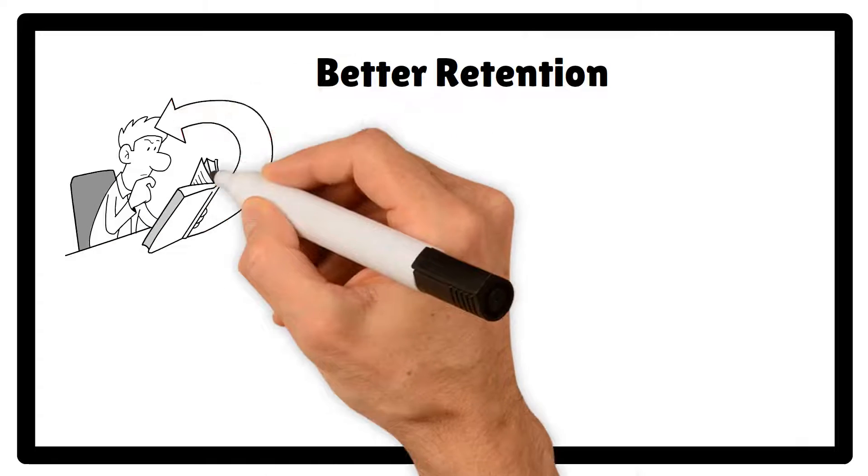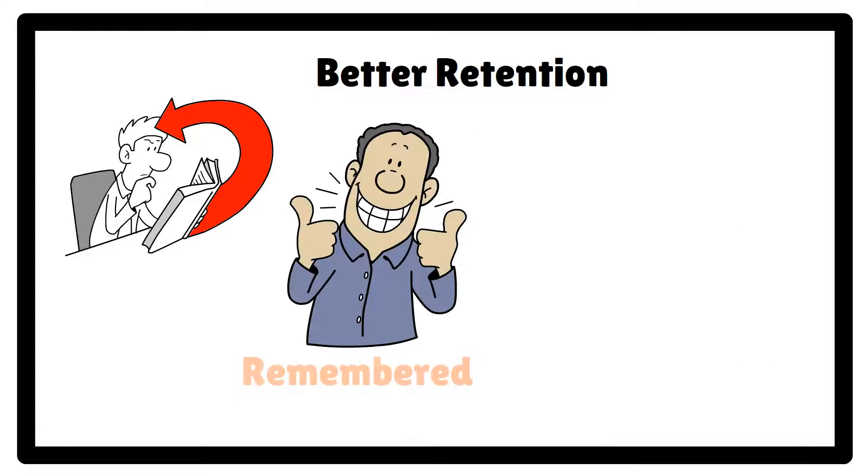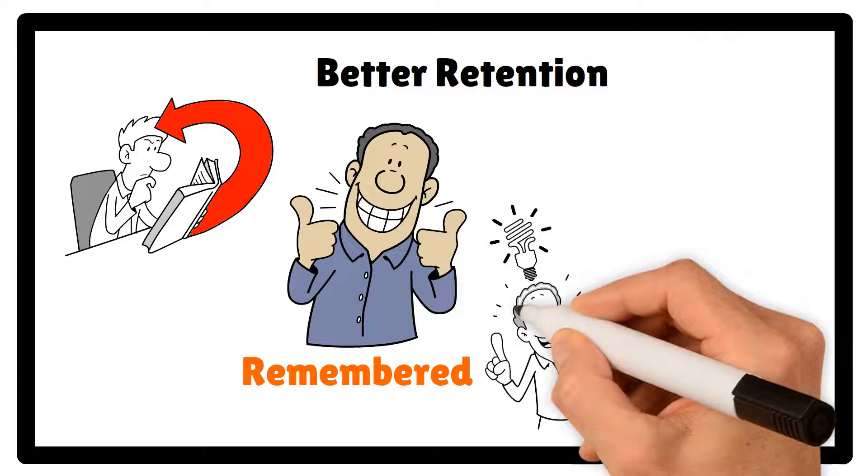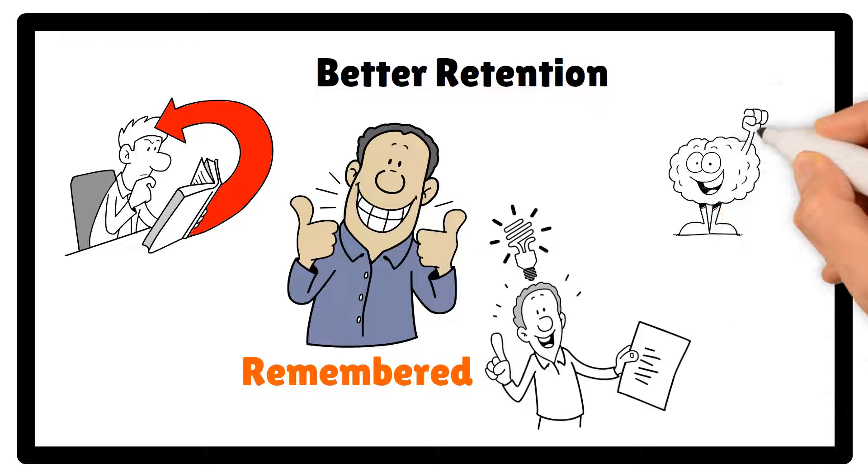The third feature of deep processing is better retention. Information processed deeply is more likely to be remembered because it is encoded in a meaningful way. By understanding and relating it to what we already know, we create stronger memory traces.